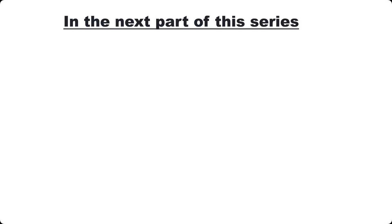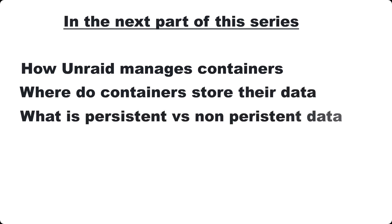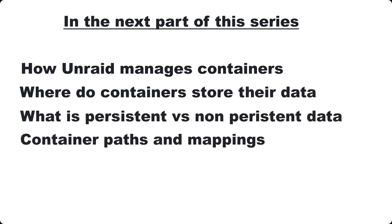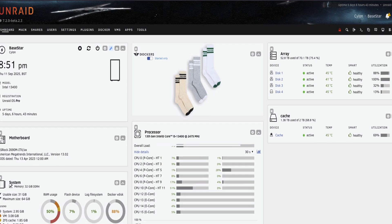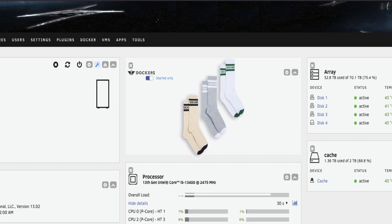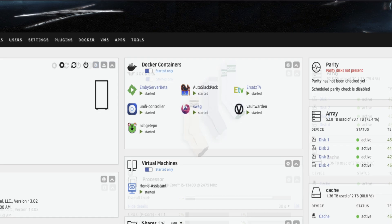In the next part of this series, we'll look at how Unraid actually manages containers, where the data goes, what's persistent and what isn't, and how paths and mappings work in practice. Before we wrap up, a quick note on naming: you often hear people say things like 'I've got a few Dockers running on my server.' Honestly, that phrase makes me wince a little — they're not Dockers, they're containers. Docker is the engine that runs them. And Docker isn't the only container runtime out there, but it's the one we use with Unraid. So if you want to sound accurate, just call them containers.